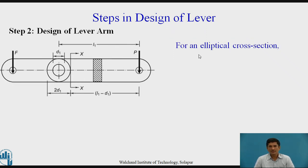If the cross section of the lever is elliptical, then I changes to πBA³ by 64 and Y becomes A by 2, where A is the major axis and B is the minor axis. And the condition is A equals twice of B.